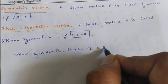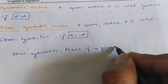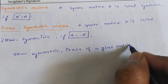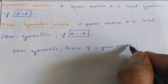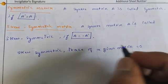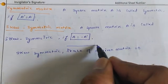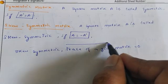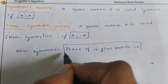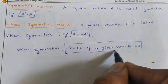Trace of a given matrix: the trace of a skew symmetric matrix is equal to zero. So if the trace of a given matrix is zero, it is skew symmetric.